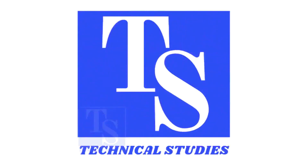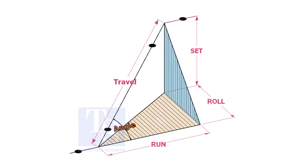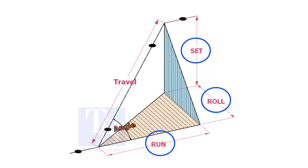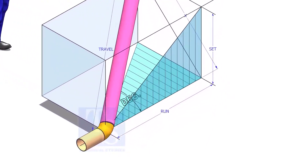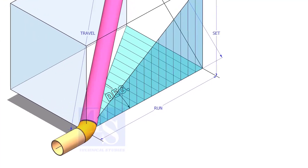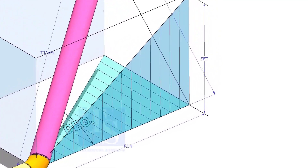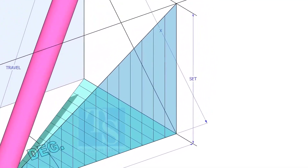Welcome to technical studies. In a piping drawing of a double rolled offset, usually the dimensions of the run, set and roll are given. In this video, I will show you how to calculate the travel length and the including angle of a double rolled offset pipe.